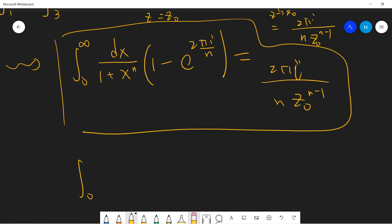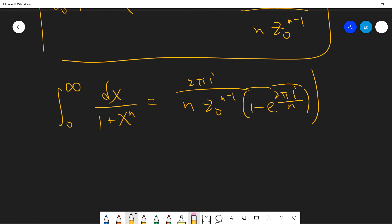So final, our final answer will be 0 to infinity dx over 1 plus x to n, equals to 2 pi i divided by n z0 to the n-1, divided by 1 minus exponential 2 pi i over n. So the final is that we just need to manipulate. And then remember that z0 is exponential pi i divided by n. So I can write as 2 pi i over n times z0 to the n-1. So let's see. We'll notice that z0 to n is minus 1. So that means z0 to the n-1 times z0 is minus 1.